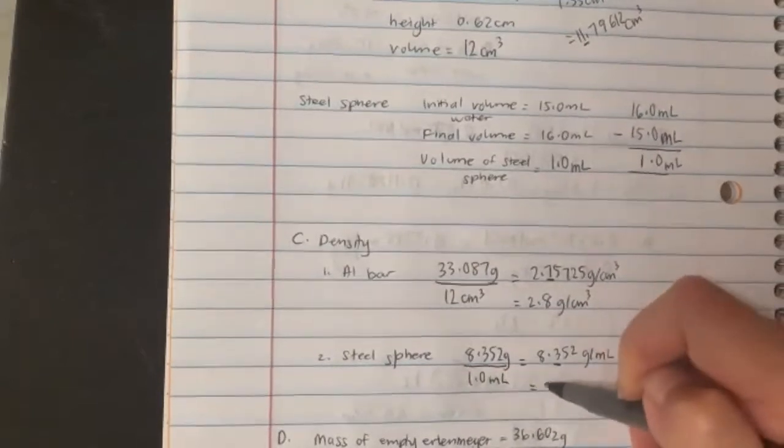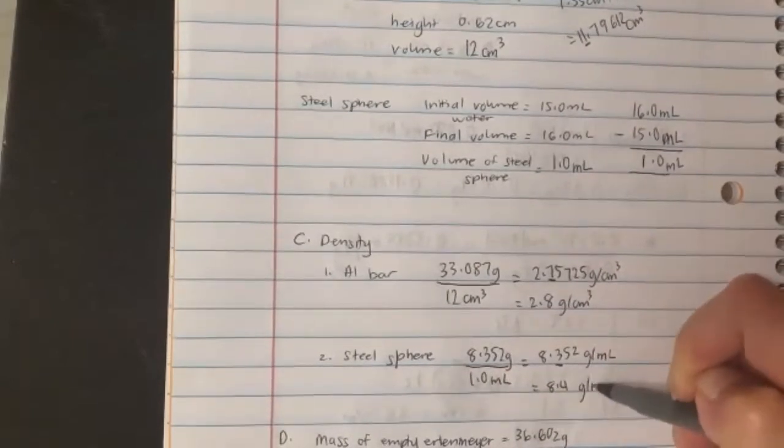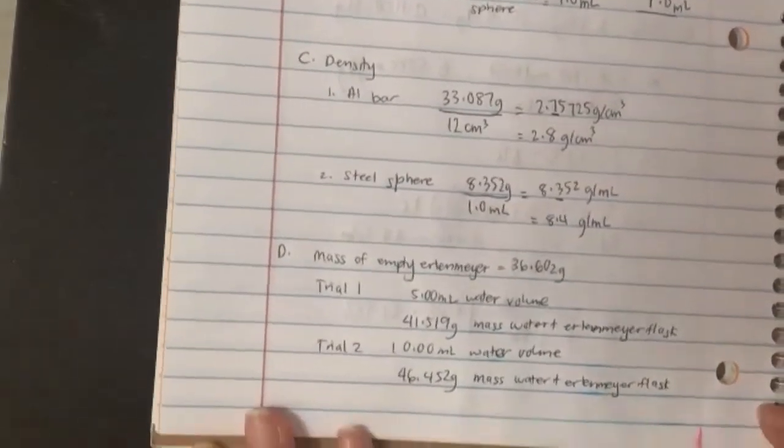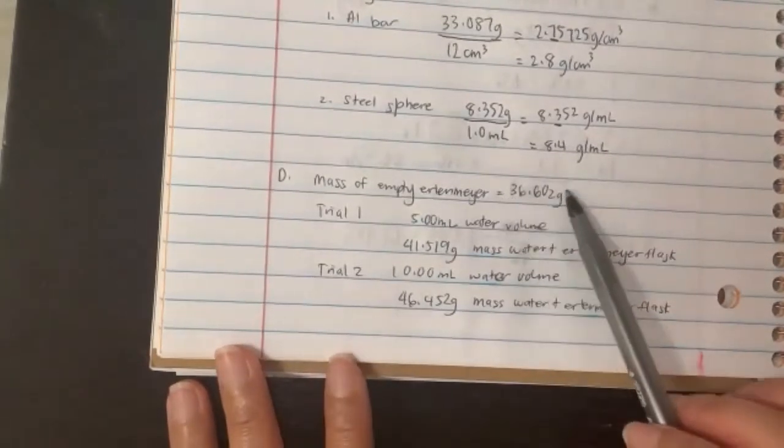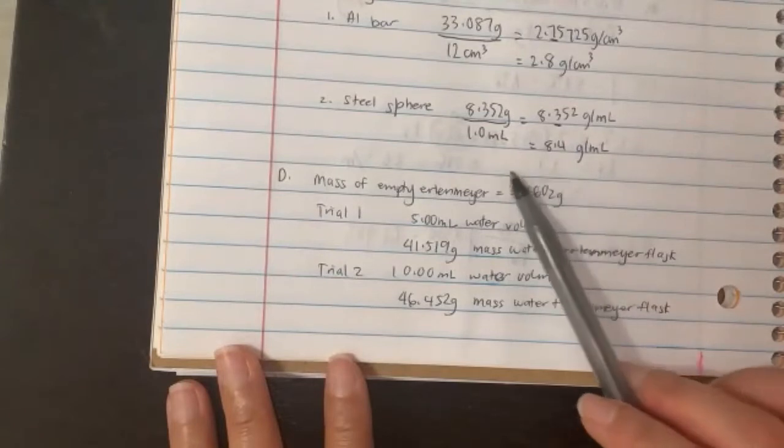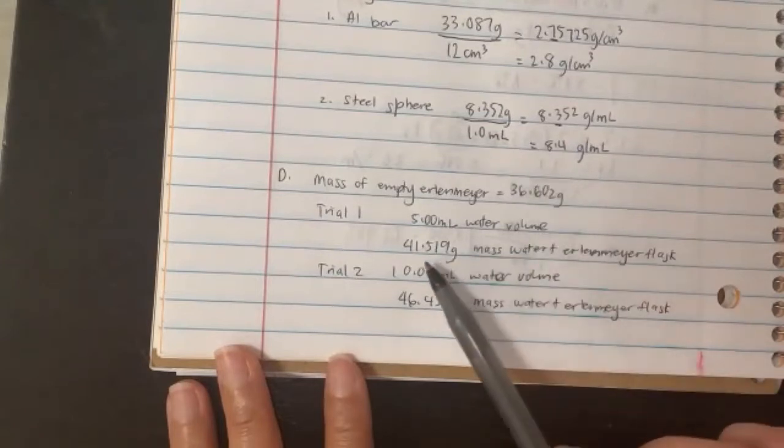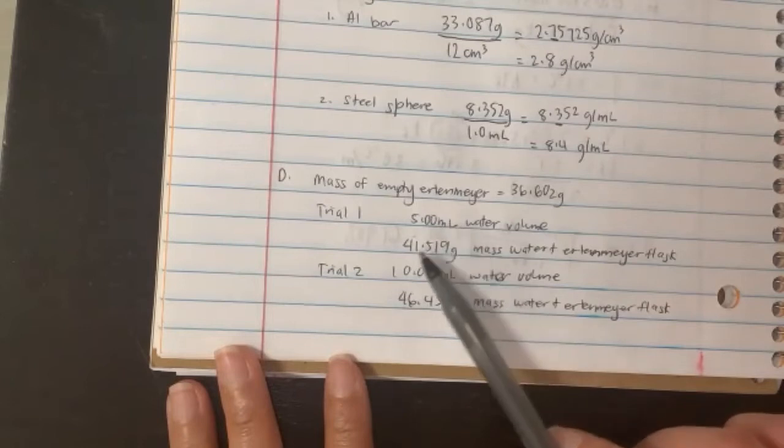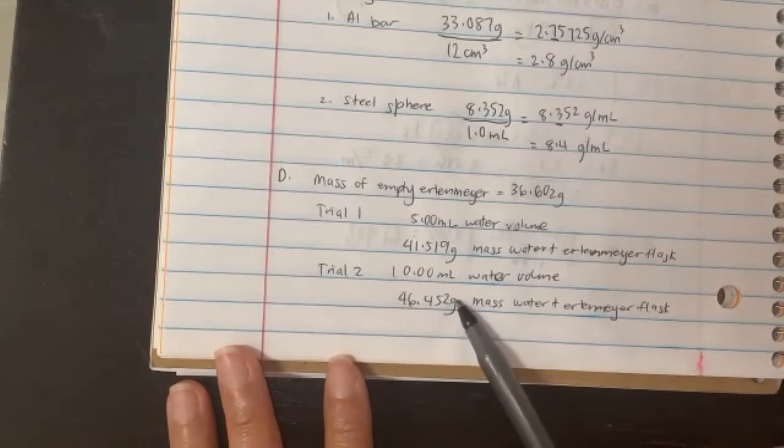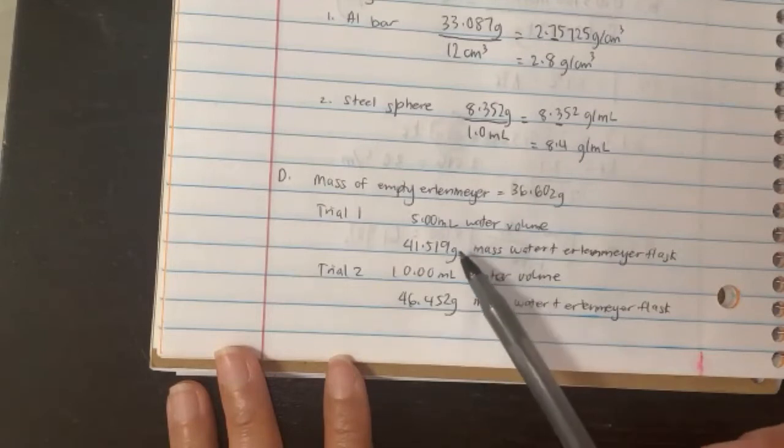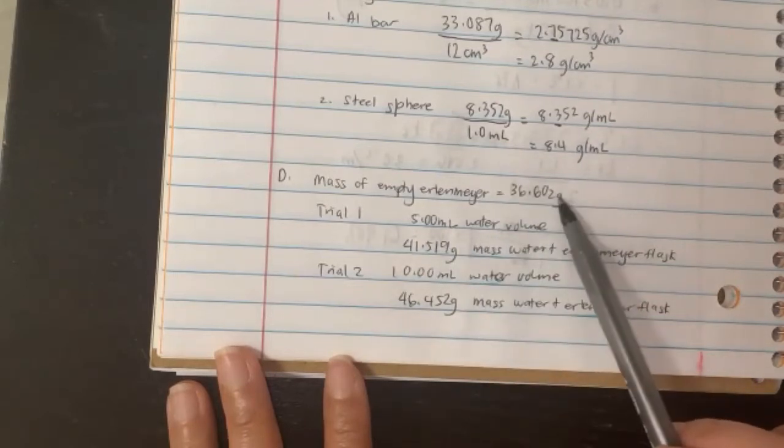Now let's go to Part D. They give you the empty flask—it weighs 36 grams. Then you have flask in water: when you put 5 milliliters of water, the flask weighs this much; with 10 milliliters, it weighs this much.